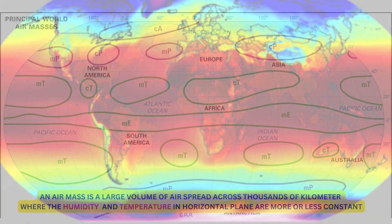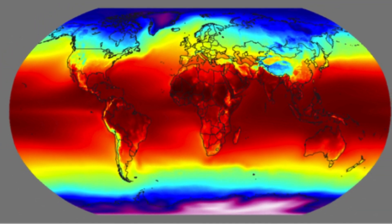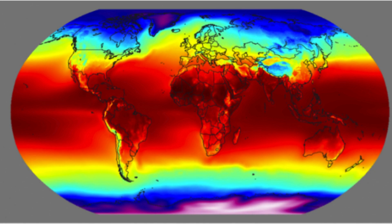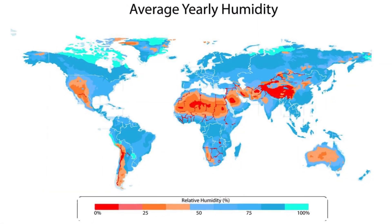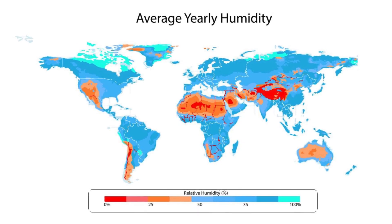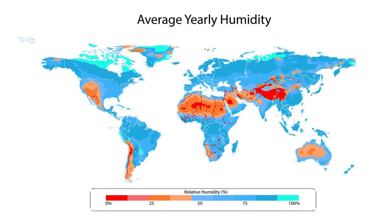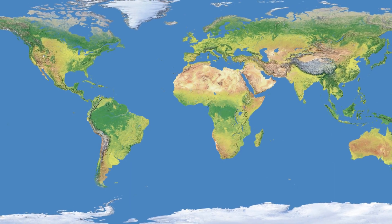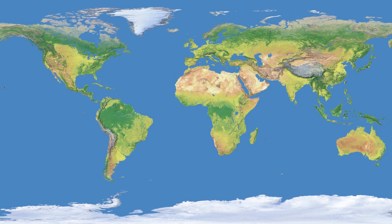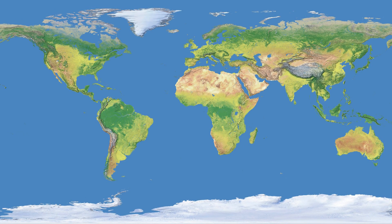The reason for humidity and temperature to be almost constant is that the ground below the air mass has a constant profiling of humidity and temperature. Air masses pick up these two properties from the ground or sea surface below. For the air mass to pick up these properties, it must remain more or less stagnant or stable over a geographical area, and it takes about one to two weeks to acquire the properties from the surface below.